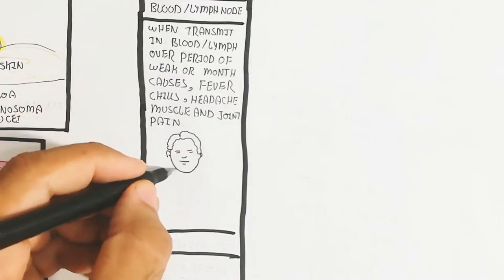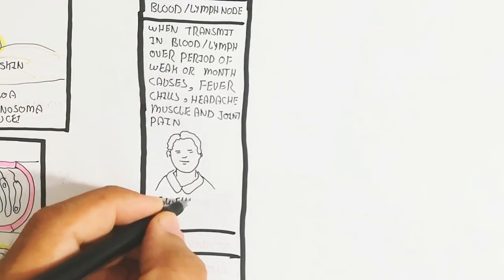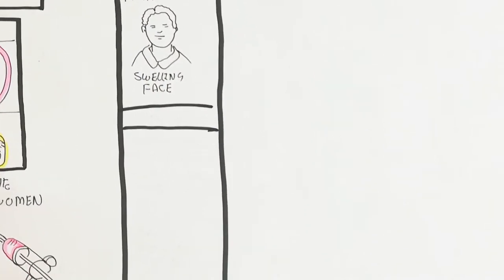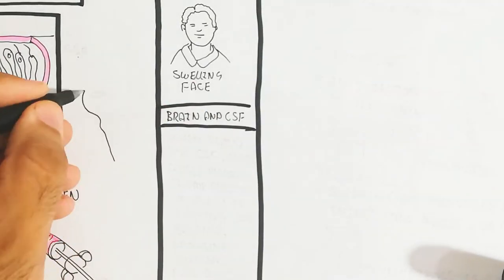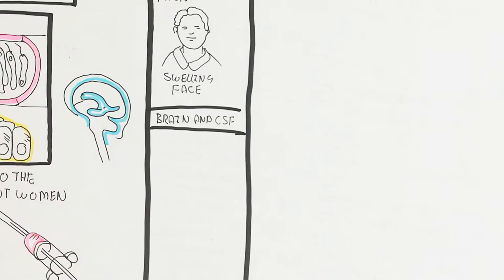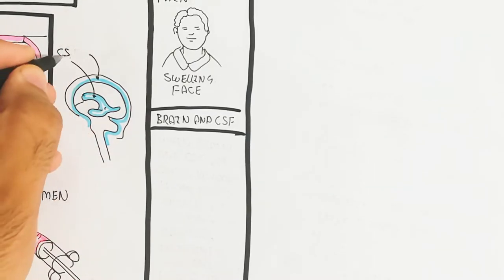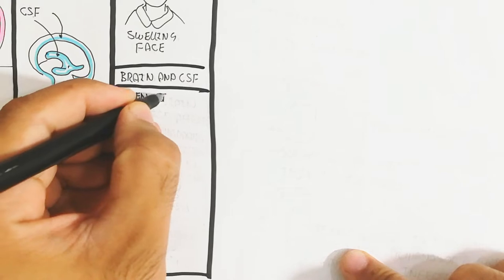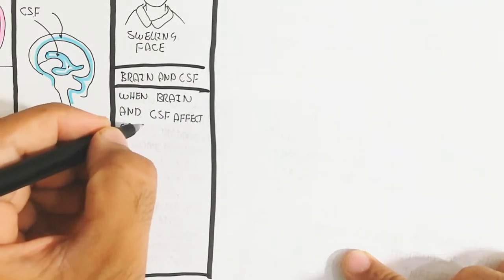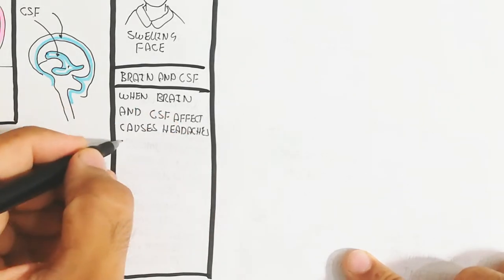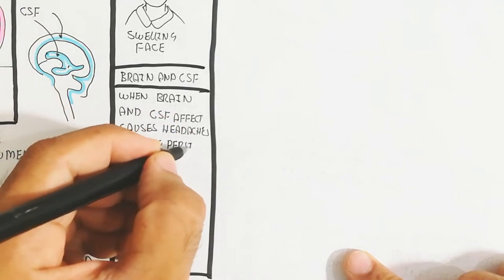When chronic infection reaches the brain and cerebrospinal fluid, it causes continuous headache. The cerebrospinal fluid becomes persistently affected, with problems in walking and balancing, drowsiness.